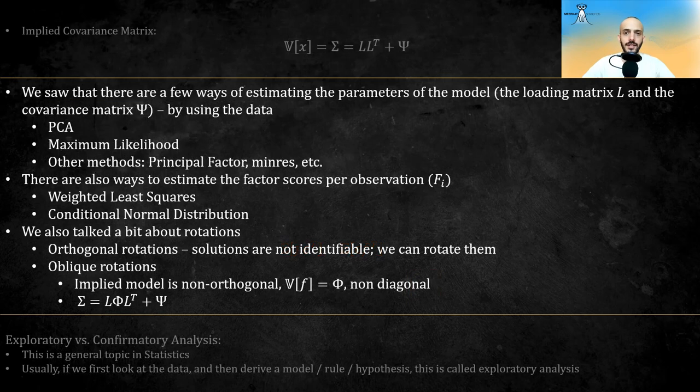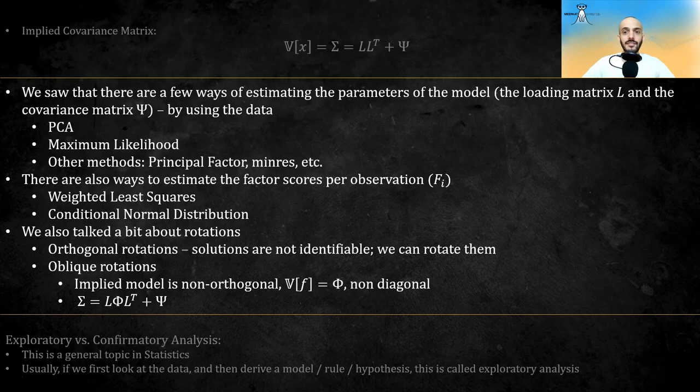We saw that there are a few ways to estimate the parameters of the model. We estimate from data. Since in factor analysis we only analyze the covariance matrix, essentially comparing the implied covariance to the observed one, the only data we care about is the sample covariance matrix. We talked a bit about PCA and maximum likelihood, and mentioned other methods such as principal factor, min res, etc. There are also ways to estimate the factor scores per observation. We saw two of them, weighted least squares and conditional normal distribution.